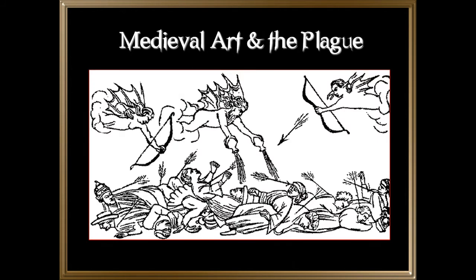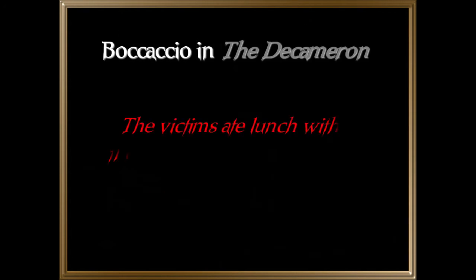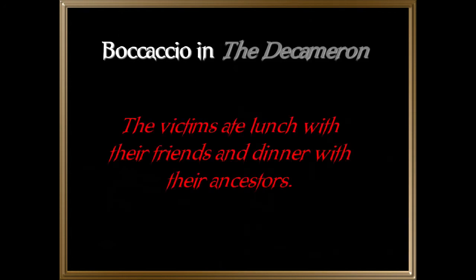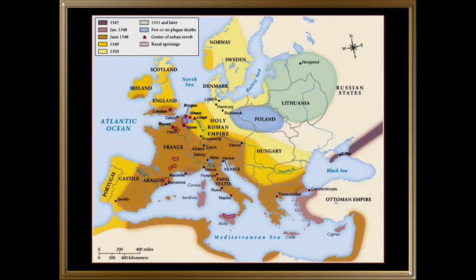Medieval art during the plague, not surprisingly, had an obsession with death. Giovanni Boccaccio in his book The Decameron wrote: 'Victims ate lunch with their friends and dinner with their ancestors' — implying you could get the disease and die just that fast. The danse macabre was an artistic genre that commented on the universality of death: no matter your station in life, whether noble, king, knight, peasant, or serf, you are vulnerable to death.